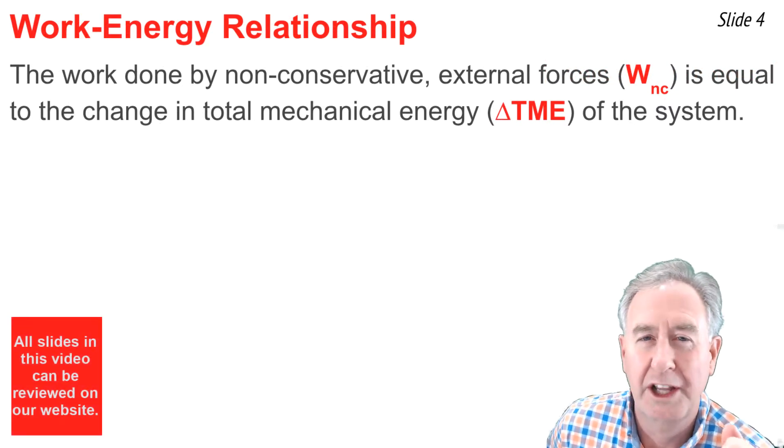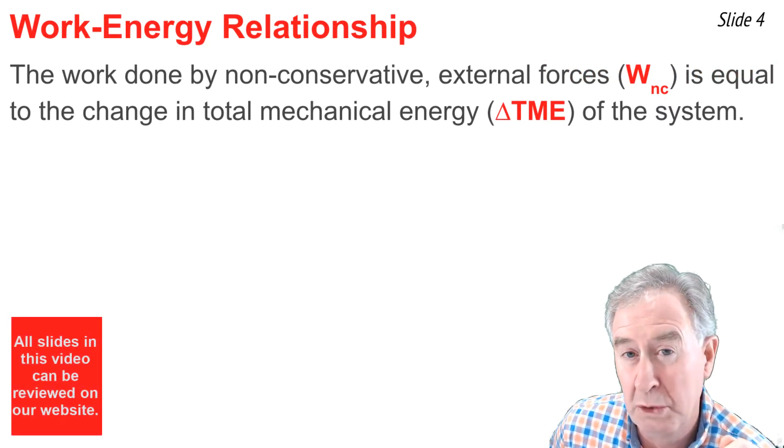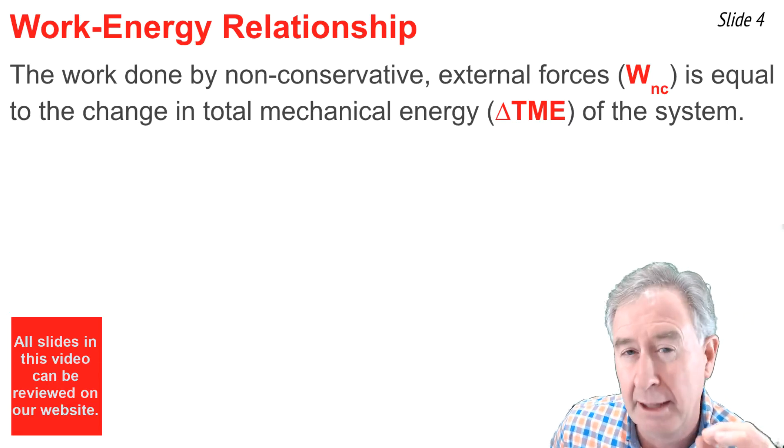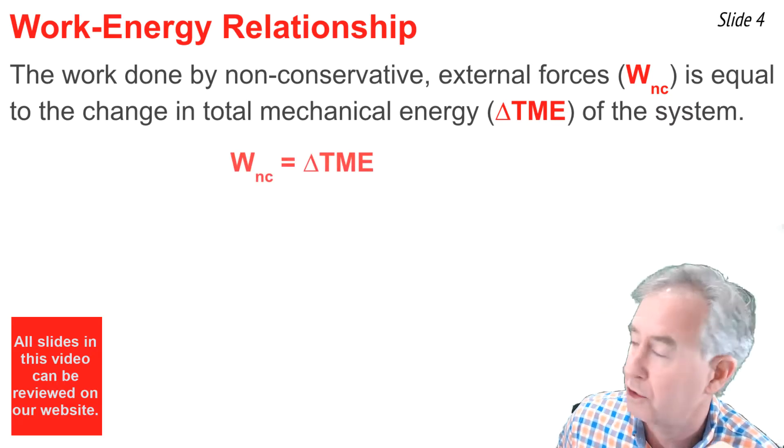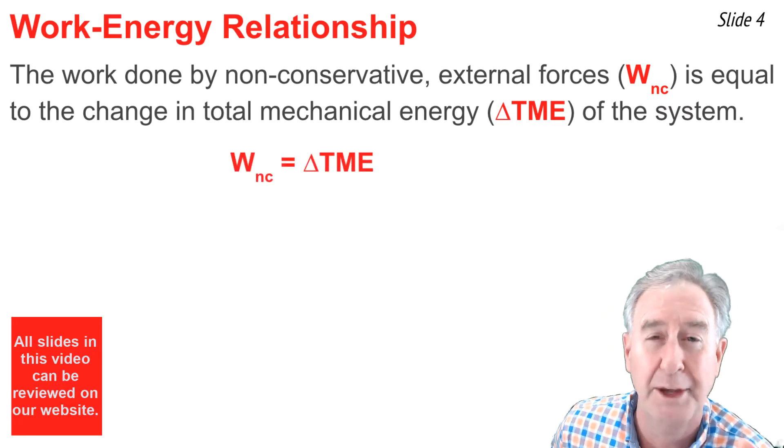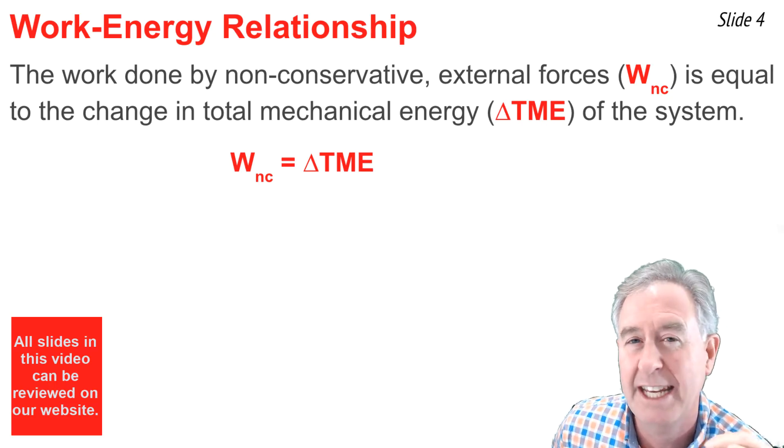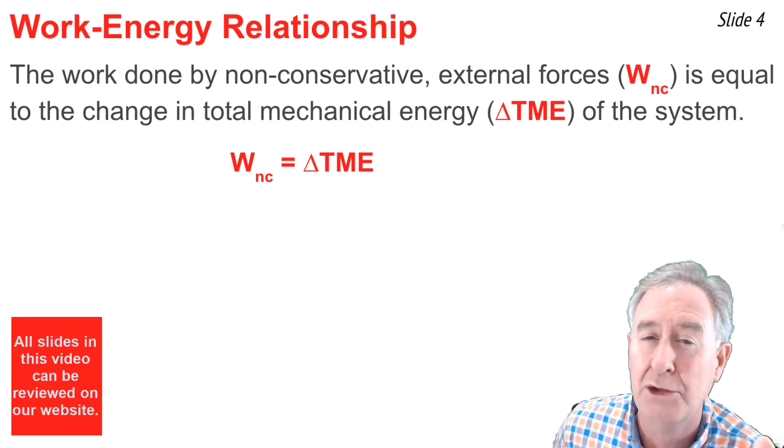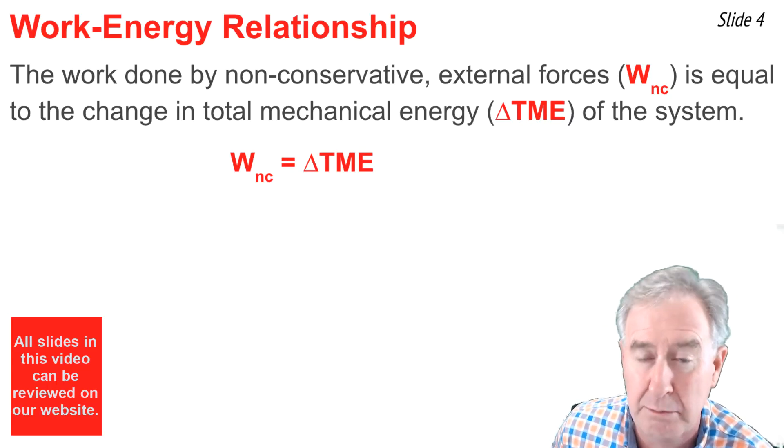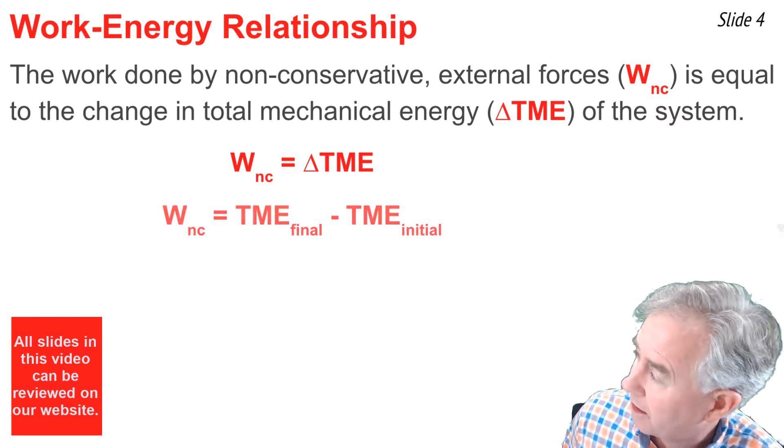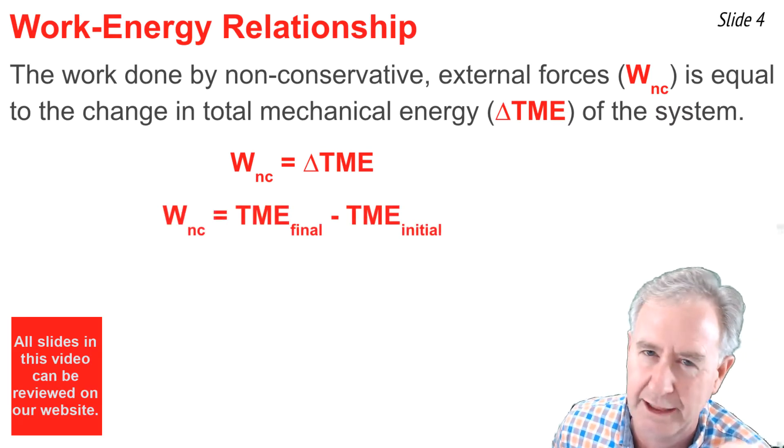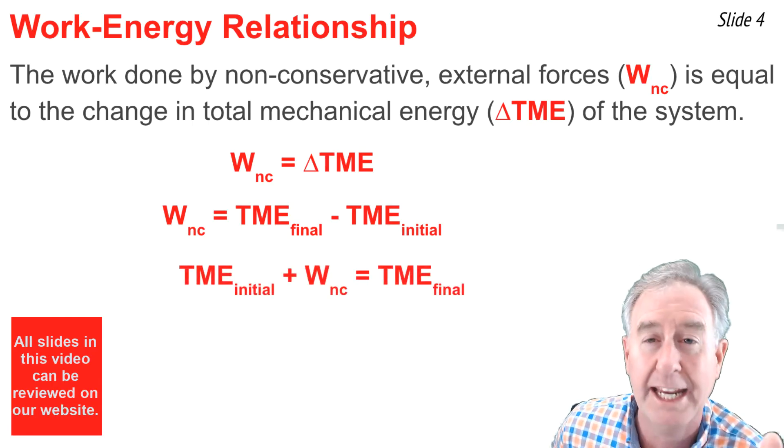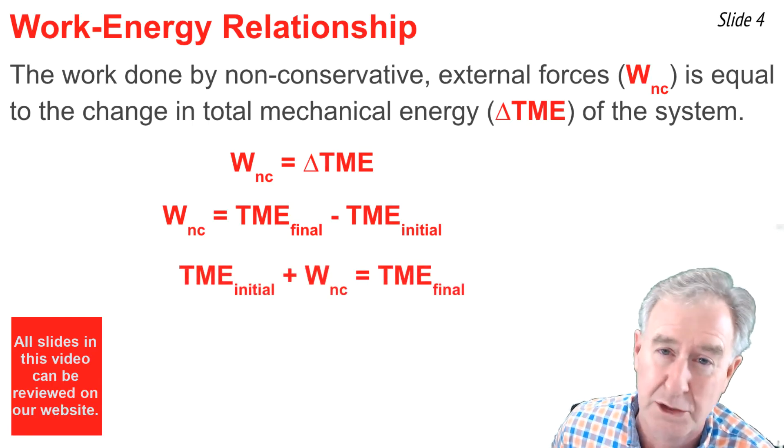So the big principle is that when non-conservative external forces are doing work upon the system, there's a change in total mechanical energy in the system. I'm going to write this as an equation, where W_nc is the work done by non-conservative forces, and delta TME is the change in total mechanical energy. In science, whenever we talk about change, we mean the final amount minus the initial amount. So I'm going to rewrite this, and I don't really like the minus TME initial, so I'm going to swing it over to the left side of the equation by adding it to both sides.